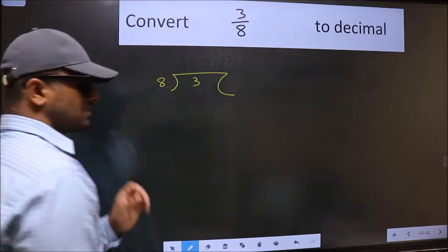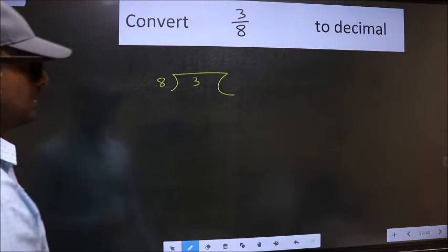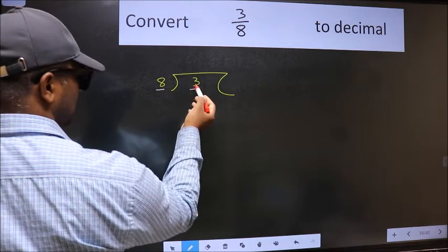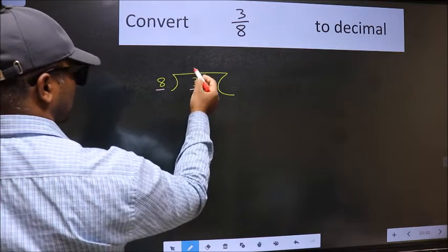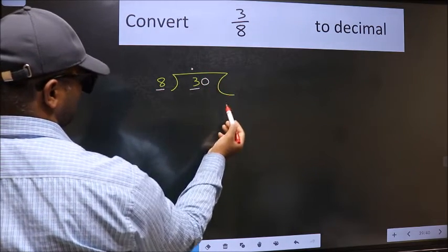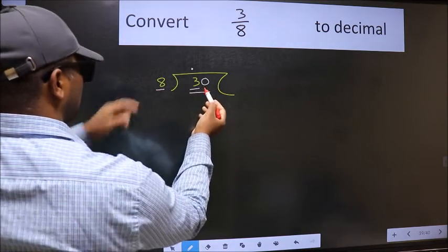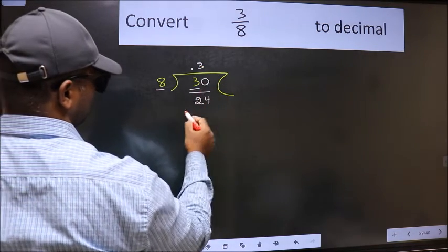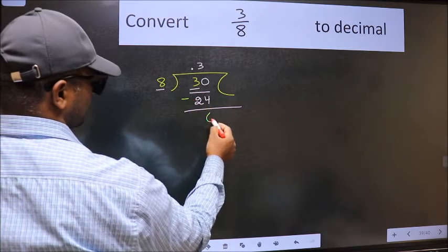This is your step 1. Next, here we have 3 and here 8. 3 is smaller than 8, so what we do is put a dot and take 0. So, 30. A number close to 30 in the 8 table is 8 times 3, which is 24. Now we should subtract. We get 6.